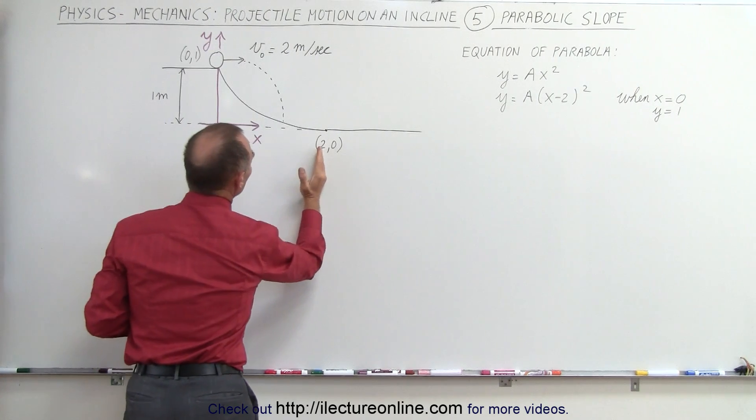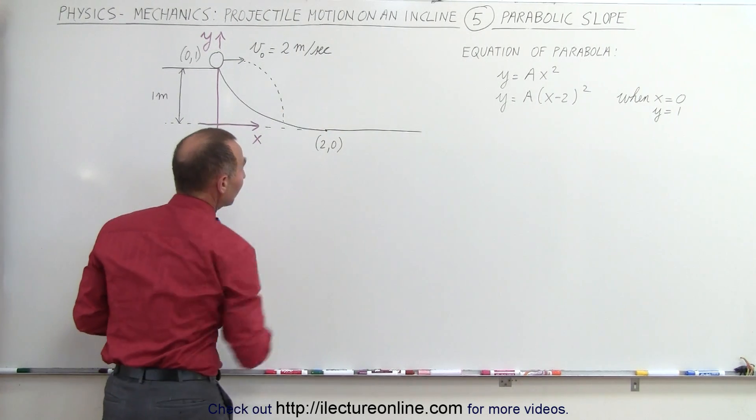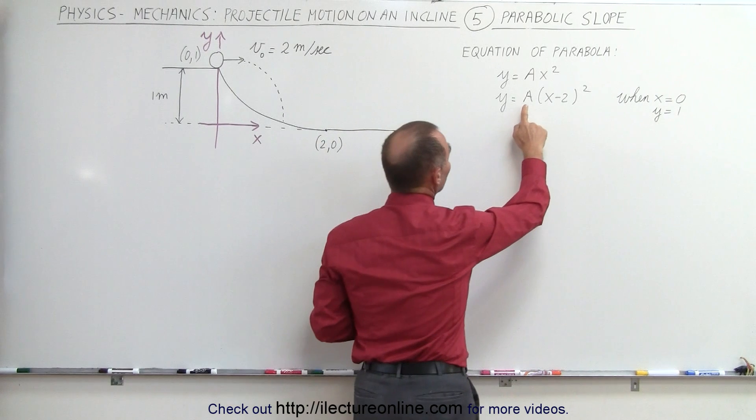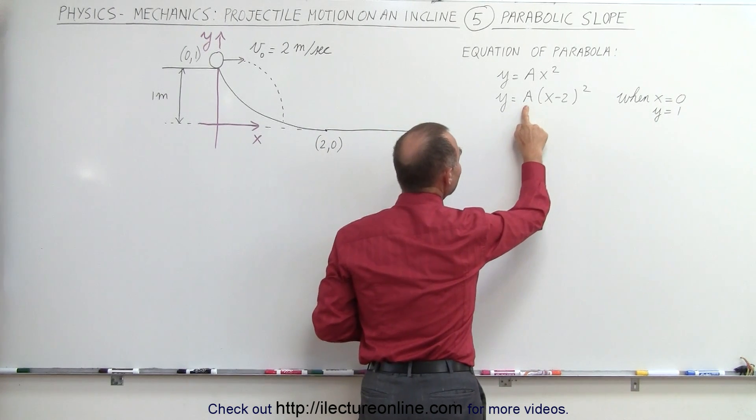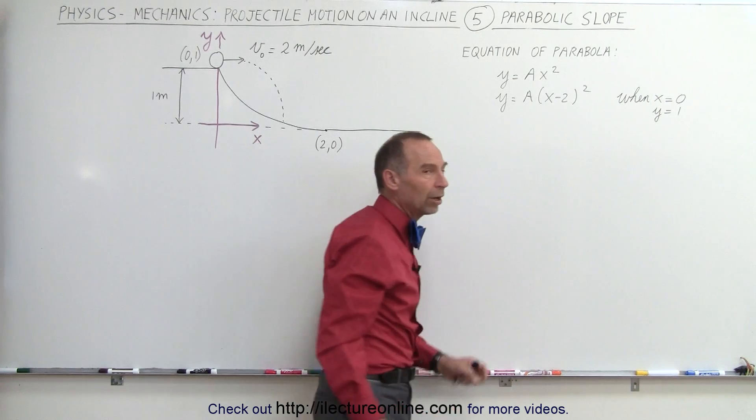In this case, we're moving the vertex two units or in this case, two meters to the right, which means we're going to have the general equation of y equals a times (x minus 2) squared.